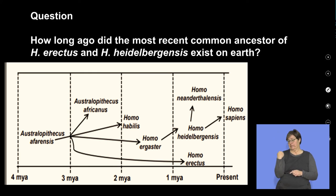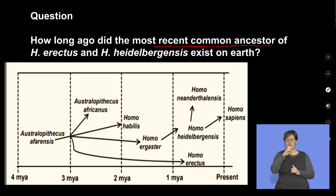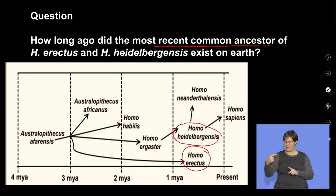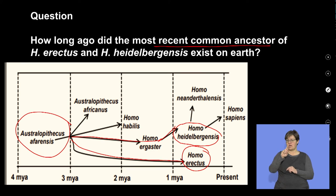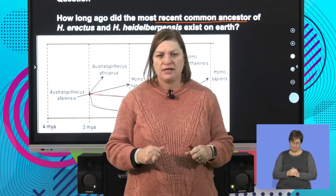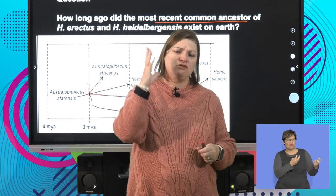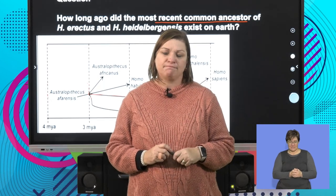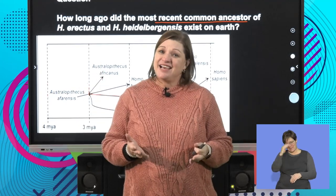How long ago did the most recent common ancestor of Homo erectus and Homo heidelbergensis exist? Find Homo erectus on the tree and Homo heidelbergensis, trace their lines back to where they link — that is the Australopithecus afarensis as their most recent common ancestor. This is not an easy section and I know it's not always your favourite, but you do have to have an understanding of it. Go over past papers, find resources, make simple mind maps to bring it down to a concept you can understand. That is all we have time for — until next time, cheerio, bye.